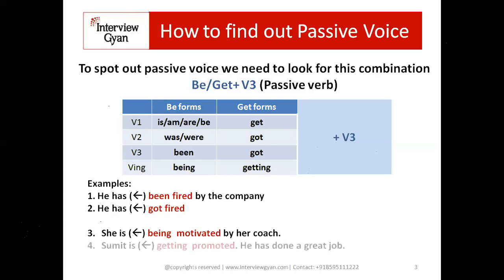Another sentence with the get form: 'Sumit is getting promoted.' Here 'getting' is the get form and 'promoted' is the third form, so 'getting promoted' is a passive verb — it's a passive sentence. The meaning is 'Sumit ko promote kiya ja raha hai.' Using 'get' adds the nuance that Sumit's own effort is involved in getting promoted — his involvement is there, though the actual promotion is given by someone else. We will look at the be-form and get-form difference in detail later.